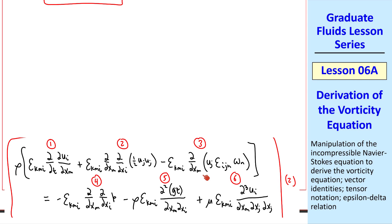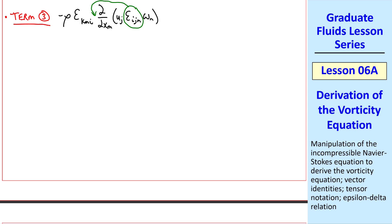Again, I'll write it out. Let's move this epsilon here. Again, since epsilon is not a function of space. So term 3 becomes minus rho, epsilon kmi, epsilon ijn, del del xm of uj omega n. I'll mention briefly that it's good once in a while to check your indices. m is repeated, i is repeated, j is repeated, and n is repeated. k is the only free index, which is what we want. Now let's take these two epsilons and recall the epsilon delta relation of a previous lesson.